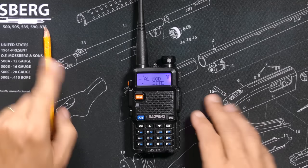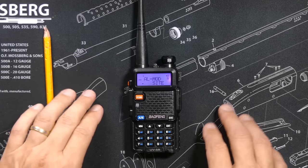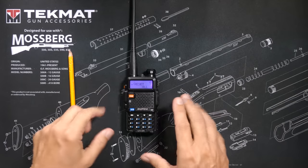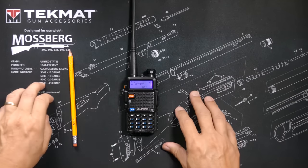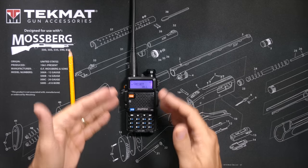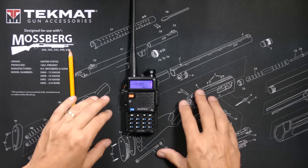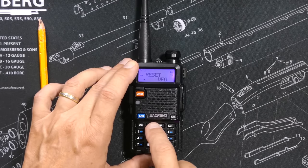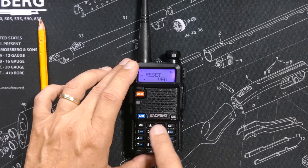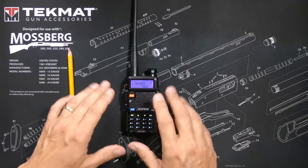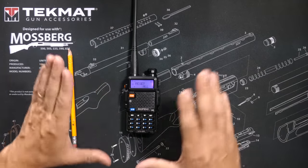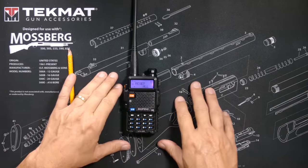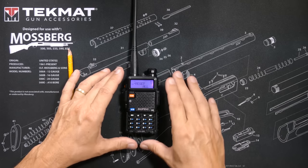Menu item number 40: Reset. When you screw the radio all up, use this menu option to clear everything and start over. There are two options: All or VFO. The VFO option clears only your channels. The All option clears the entire radio — all channels, all settings — and resets everything to the factory default.